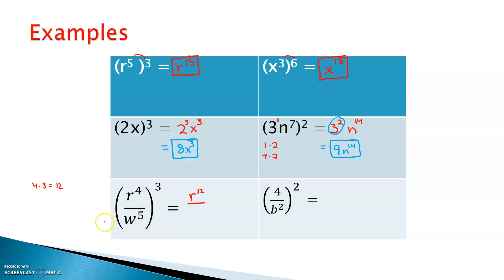And same thing on the bottom. What do you do with the five and the three? Well, it's going to be five times three, which is 15. So the bottom should turn into w to the 15th power. And again, r's and w's, not the same thing. I can't do anything with these guys, different variables.